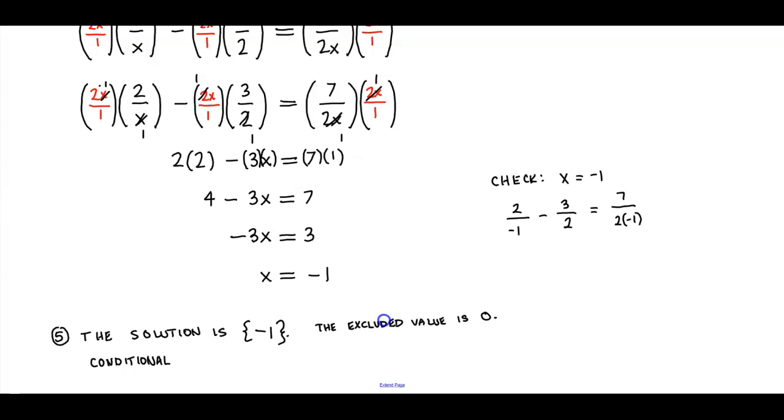So what this does is we want to find a common denominator. So let's go ahead and multiply this out. We have negative 2 over 1 minus 3 over 2, which is equal to negative 7 over 2. On the left side, we want to find a common denominator, which is going to be 2.